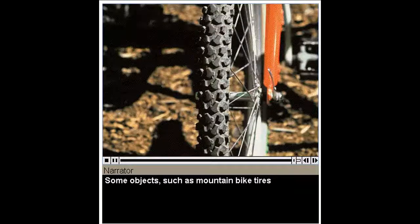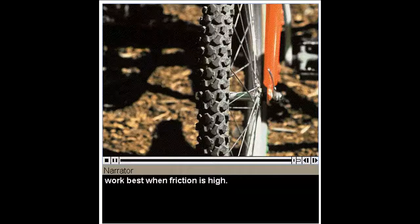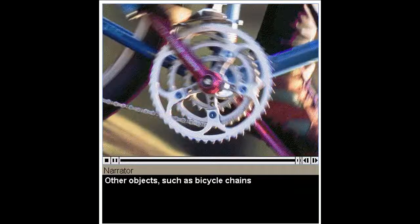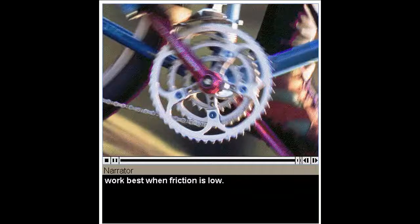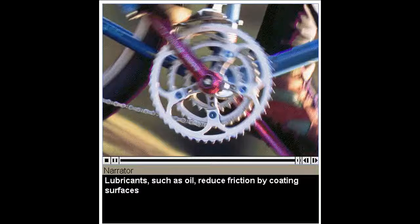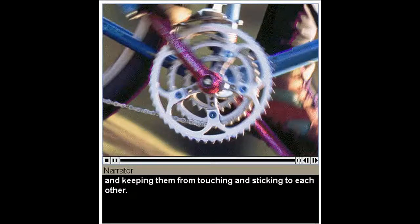Some objects, such as mountain bike tires, work best when friction is high. These tires create a lot of friction by having a sticky and bumpy rubber surface. Other objects, such as bicycle chains, work best when friction is low. Lubricants, such as oil, reduce friction by coating surfaces and keeping them from touching and sticking to each other.